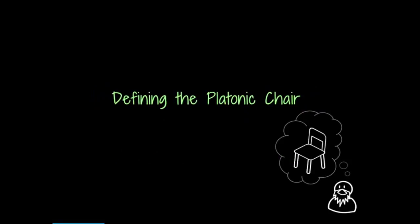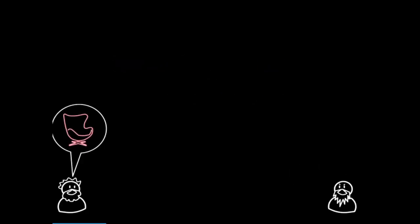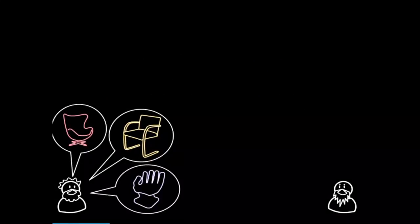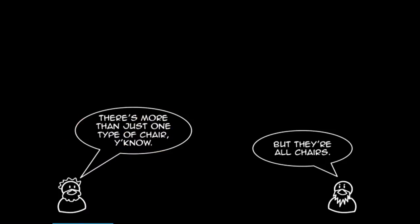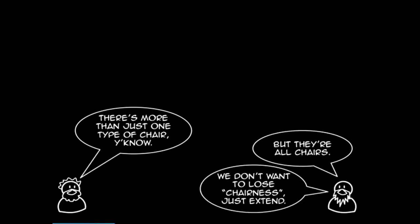So what does all this art history and philosophy have to do with OOP? Let's talk about Plato in the modern age — he's actually a programmer now. He's sitting there trying to define the Platonic chair in his code, so he creates 'class Chair.' His co-worker working two cubes down, Aristotle the architect, is saying there are all these other chairs you're forgetting about — there's more than one kind of chair. And Plato is saying, but they're all still chairs. We don't want to lose chairness; we just want to extend.